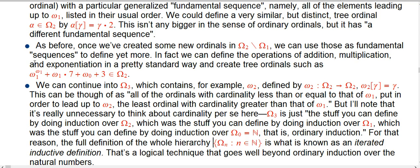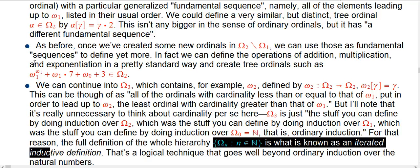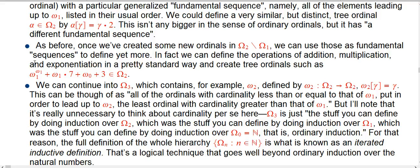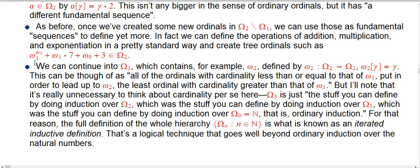The full definition of this whole hierarchy is what's known as an iterated inductive definition. We are using a logical technique that starts with natural numbers, uses ordinary induction to create something, then creates big omega_1, then inducts over that, then inducts over what you created there, and so on — inducting as many times as you feel like you need to. It's a logical technique that goes well beyond ordinary induction over the natural numbers.